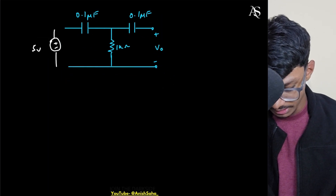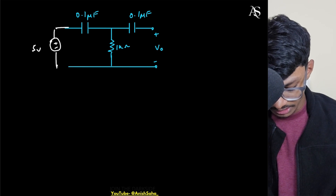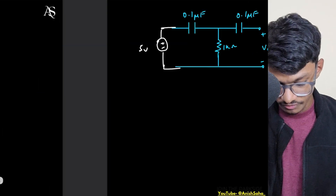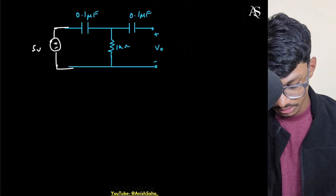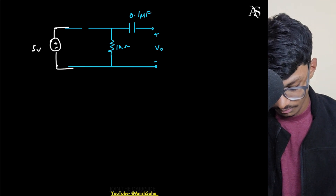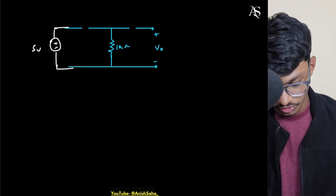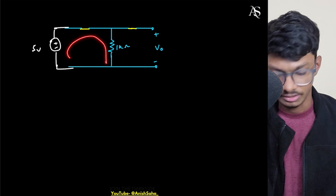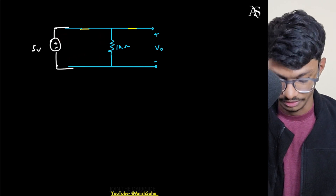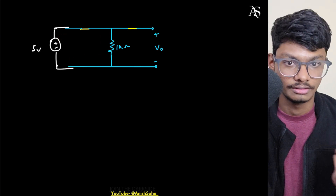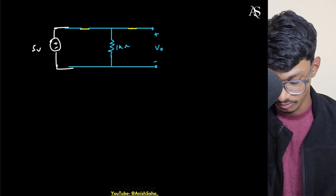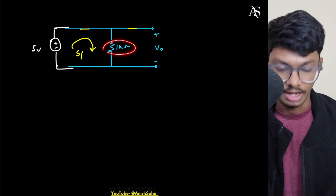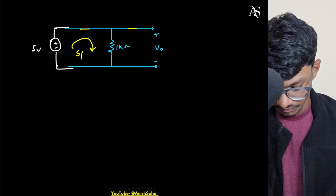Initially, the capacitors are uncharged because nothing is mentioned, so I'll assume they are uncharged. If capacitors are uncharged, I can short them. With them shorted, some current will flow because the potential is directly applied across the circuit. The current value will be 5 divided by R. With R equal to 1 kilo-ohm, that gives 5 milliamps.